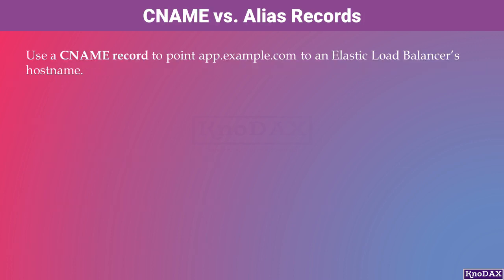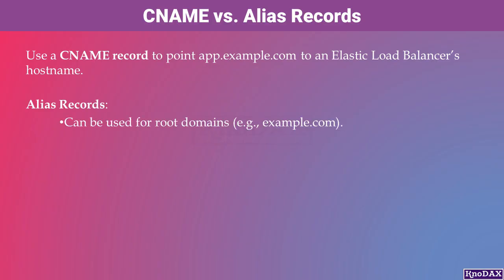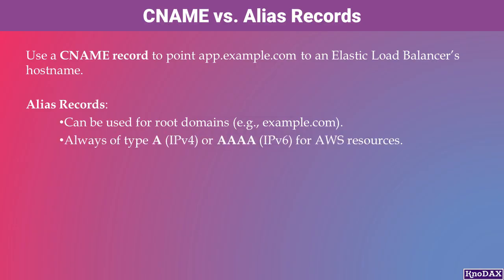Let's look at the differences between CNAME and ALIAS records in Route 53. You can use a CNAME record to map a subdomain, such as app.example.com, to an elastic load balancer's hostname. However, CNAME records cannot be used for root domains. ALIAS records can point root domains like example.com to AWS resources such as an S3 bucket or a load balancer. They are always of type A for IPv4 or quad-A for IPv6. One key feature of ALIAS records is that you can't set a TTL — they dynamically inherit the TTL from the underlying AWS resource.